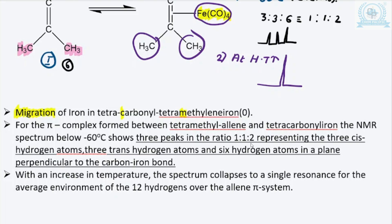For the pi complex formed between the tetramethyl anion and tetracarbonyl iron: the NMR spectrum below minus 60 degrees Celsius shows three peaks in the ratio 1:1:2, due to three cis hydrogen atoms, three trans hydrogen atoms, and six hydrogen atoms perpendicular to the carbon–iron bond.